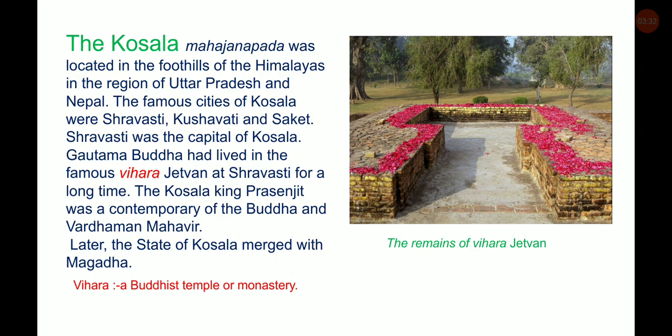The Kosala Mahajanapada was located in the foothills of the Himalayas in the region of Uttar Pradesh and Nepal. The famous cities of Kosala were Shravasti, Kushavati and Saket. Shravasti was the capital of Kosala. Gautama Buddha had lived in the famous Vihara Jetavana at Shravasti for a long time. The Kosala king Prasenajit was a contemporary of the Buddha and Vardhamana Mahavira. Later, the state of Kosala merged with Magadha.